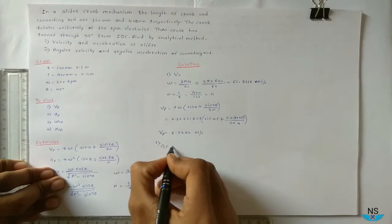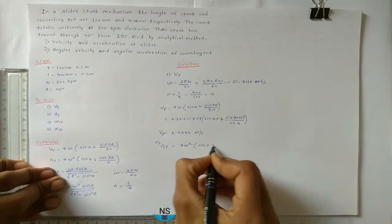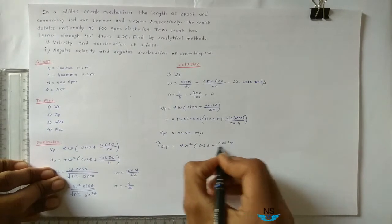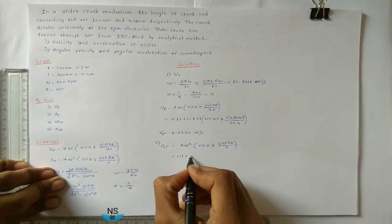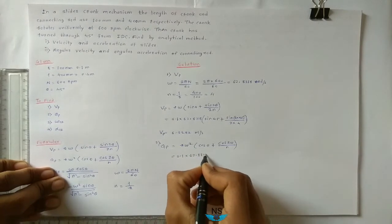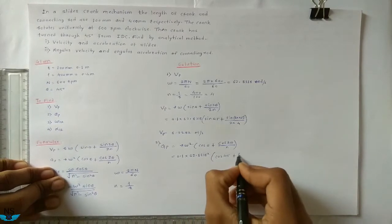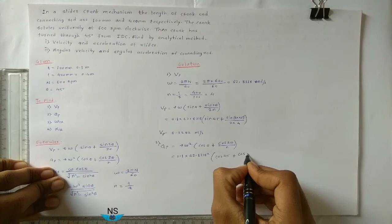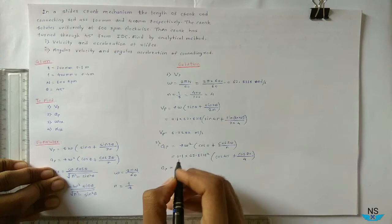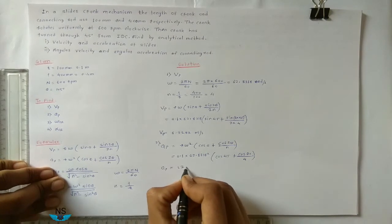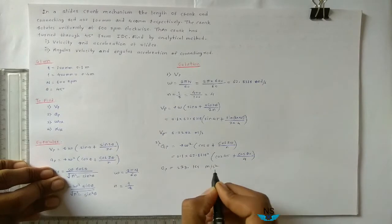Second, acceleration of piston: Ap equals R·ω²·(cos θ + cos 2θ / n) equals 0.1 × (62.8318)² × (cos 45° + cos 90° / 4). Ap equals 279.154 m/s².